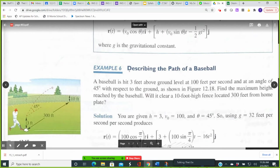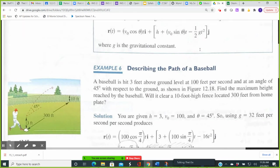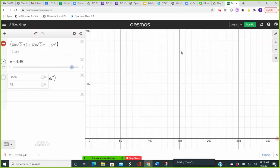When we substitute these values into our position vector for an object in projectile motion, which you see at the very top of the screen, and then simplify using trigonometry, this is what we will have. The horizontal component of the baseball's position, meaning how far it has traveled horizontally from home plate, will be given by 50 times square root of 2t. And the vertical component of the baseball's position, meaning the height of the ball above the field, will be given by 3 plus 50 times square root of 2t minus 16t squared.